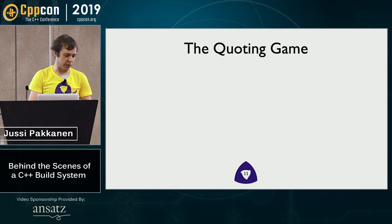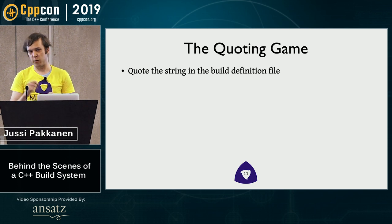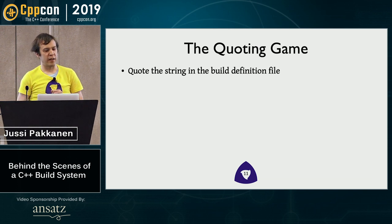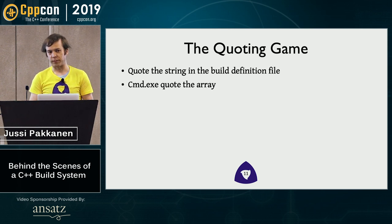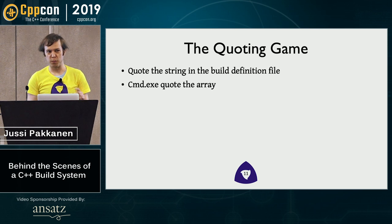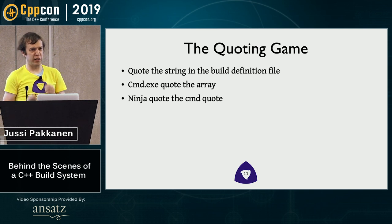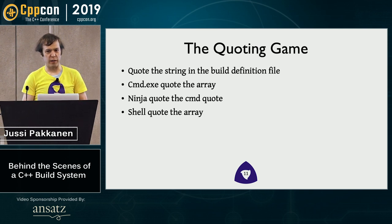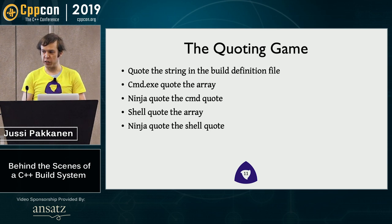Instead, you get to play the fun game called the quoting game. First, your user types in the command and does some quoting to make it work. Then you need to quote that string into a command.exe command string, because that's what Windows actually uses underneath. Then you need to do all the magical quoting, which is more difficult than you'd think. And then if you're using Ninja to invoke your processes, you need to Ninja-quote the quoted text. And on non-Windows platforms, you get to do shell quoting of the same thing, which is also an interesting challenge. Then you get to Ninja-quote that shell quote.